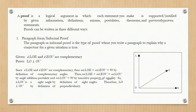A proof is a logical argument in which each statement you make is supported or justified by given information, definitions, postulates, theorems, and previously proven statements. Proofs can be written in three different ways.